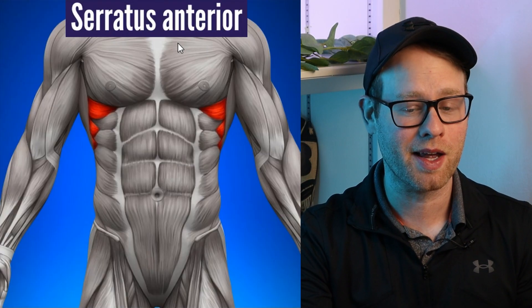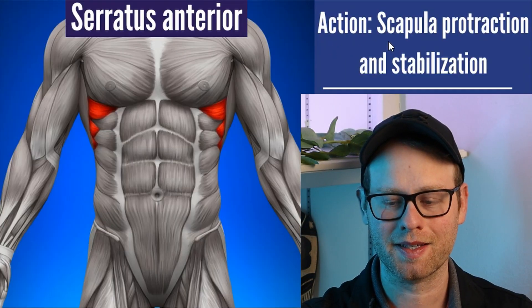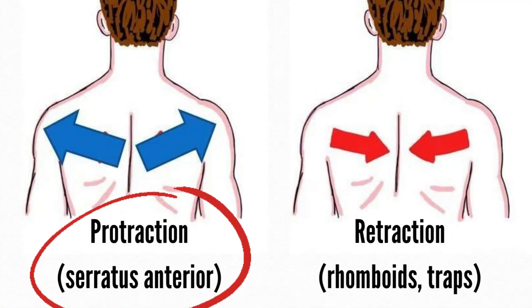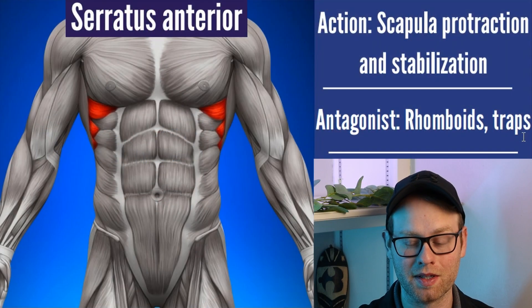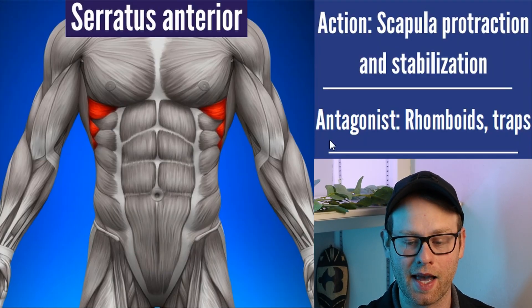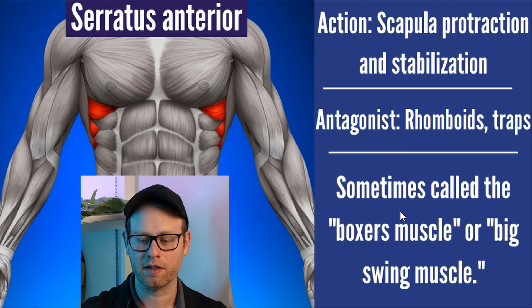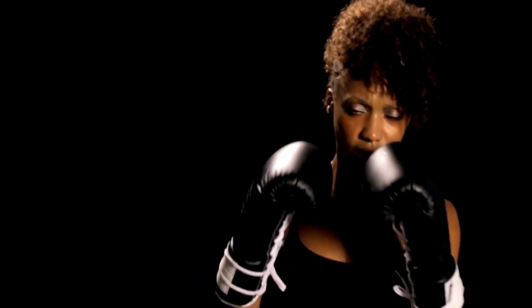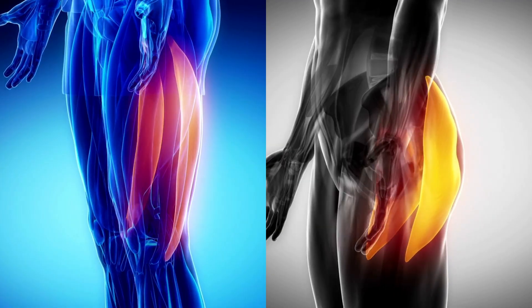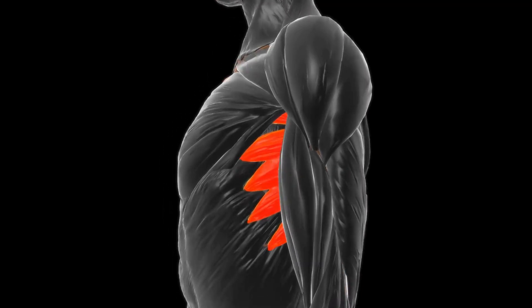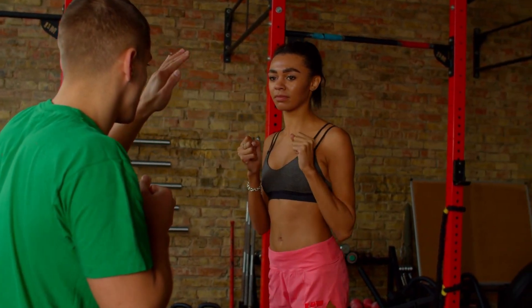Next up, we have serratus anterior. Mainly what this muscle does is scapular protraction — that forward motion of the scapula. Because the rhomboids and the traps do the exact opposite — scapular retraction — that makes them the antagonists to this muscle. Serratus anterior is sometimes called the boxer's muscle or the big swing muscle. That said, punching power typically comes from the bigger muscles in the lower body and core; serratus anterior would really only be involved in a quick jab-type punch.